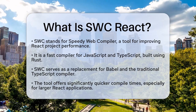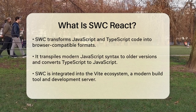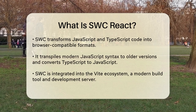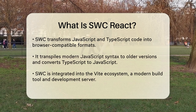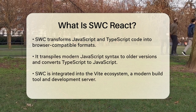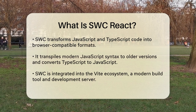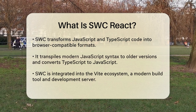When you use SWC in a React project, it handles the transformation of your JavaScript and TypeScript code into a format that the browser can understand. This includes transpiling newer JavaScript syntax to older versions for compatibility, transforming TypeScript to JavaScript, and applying various plugins for additional transformations.